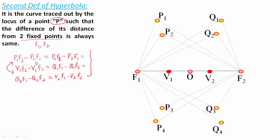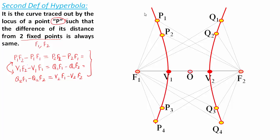When all those track points follow this constant-difference condition you get a curve, and this is what you call a hyperbola. The difference is actually equal to the distance V1V2, and V1 and V2 are what we refer to as the vertices — or more precisely, the vertices of the hyperbola.